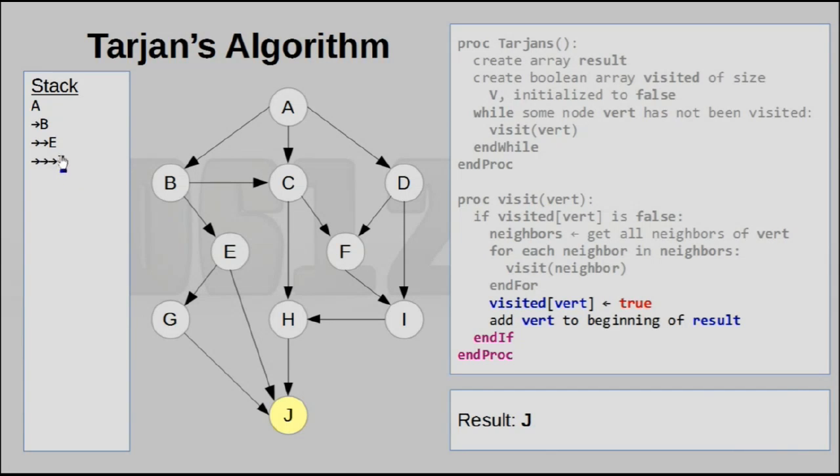So of course, because this call has ended right here, we will continue with the previous call, and that will be at node E. So E has already visited J in its previous run, so now it's going to go straight to G.